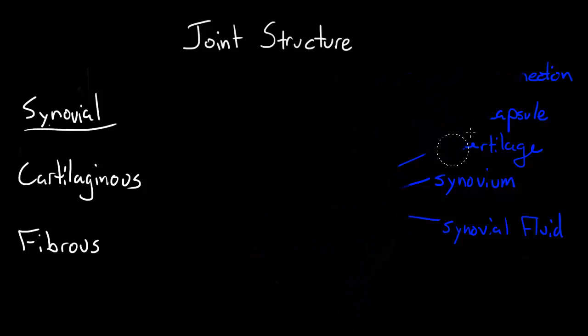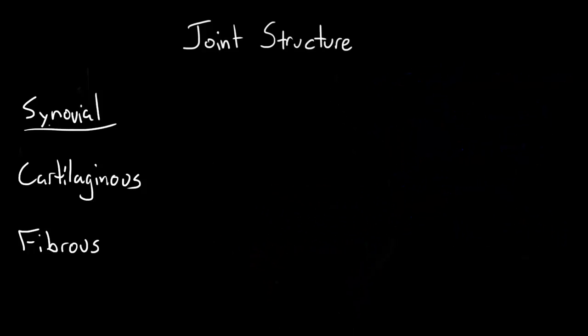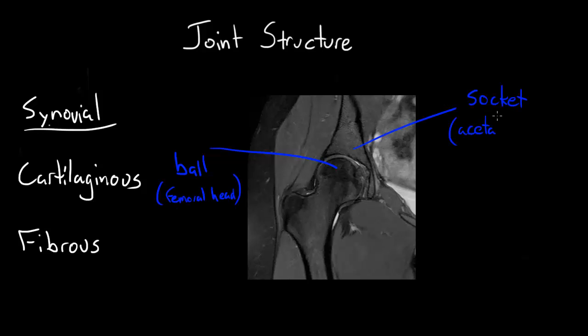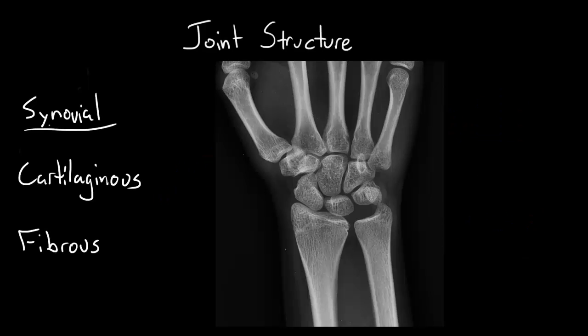The most mobile joints are the ball and socket types — your hip and your shoulders — which allow motion in three planes. Here is an MRI of the hip joint in the coronal plane, so it's like you're looking at the patient's right hip as they're standing in front of you. You can see how it really is shaped like a ball in a socket. The ball is the femoral head and the socket is the acetabulum. You can also see a little bit of normal synovial fluid there.